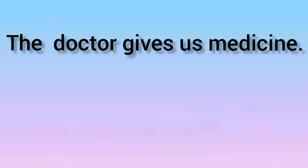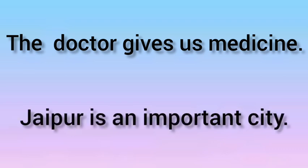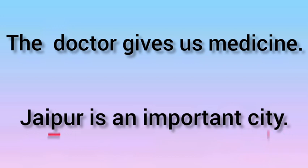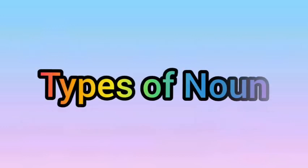The second example is: Jaipur is an important city. In this sentence also, there are two nouns. First, Jaipur — Jaipur is a name of place. Next, city — city is also a noun. Our next topic is Types of Noun.